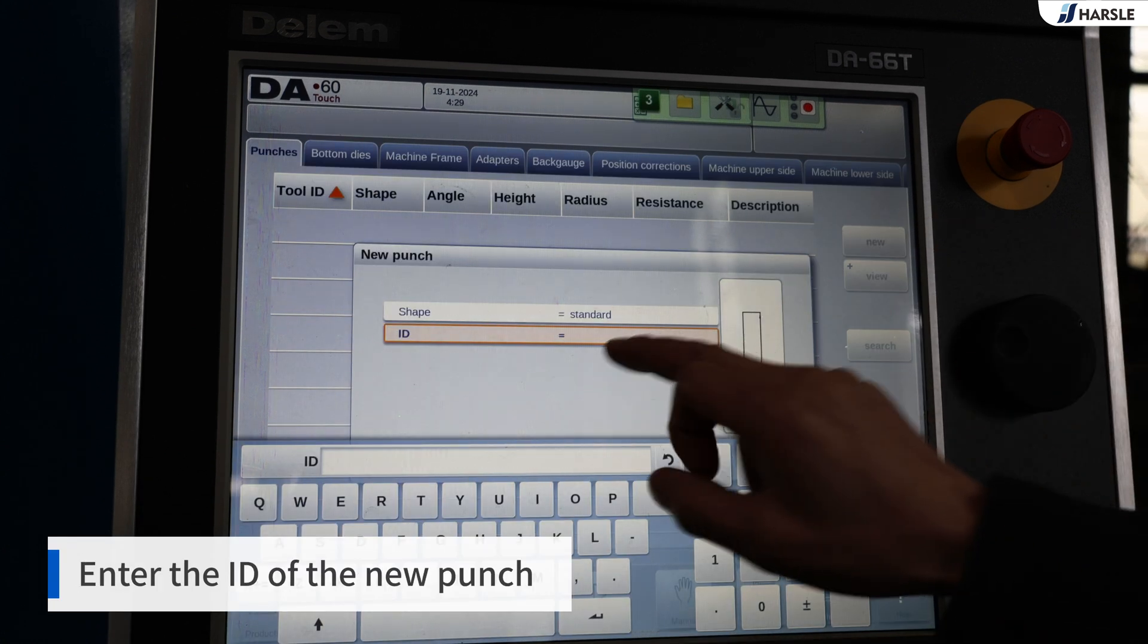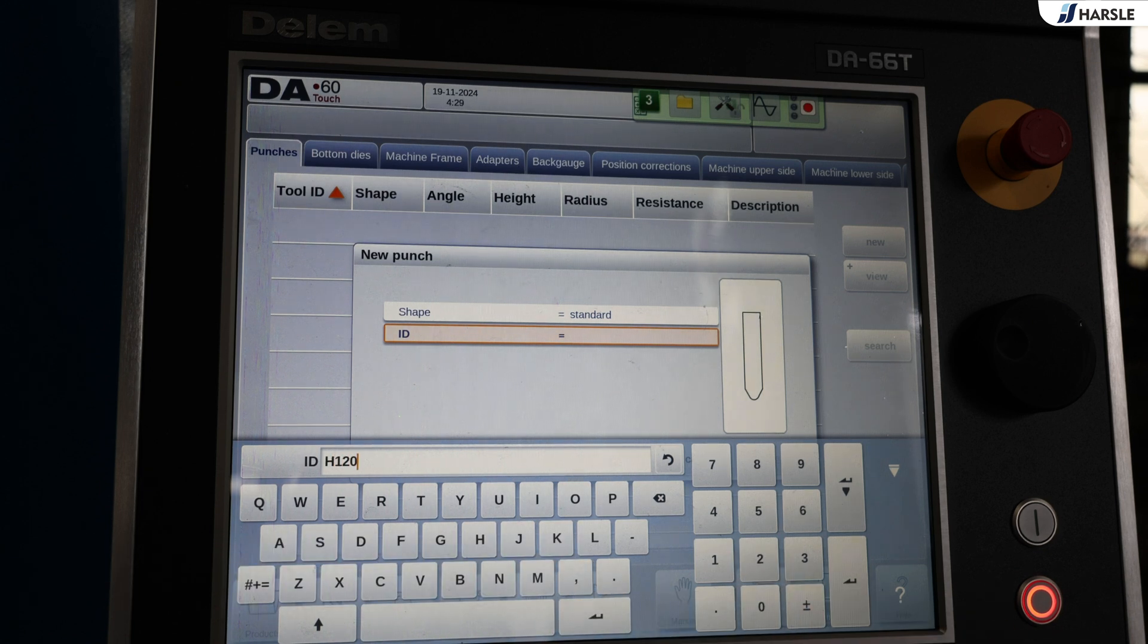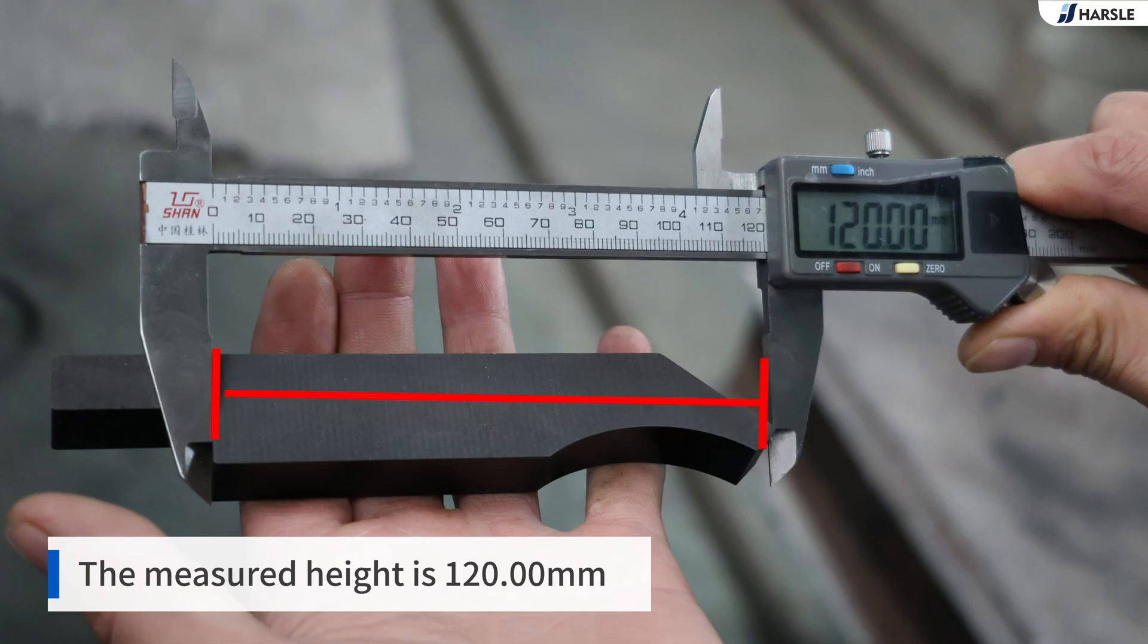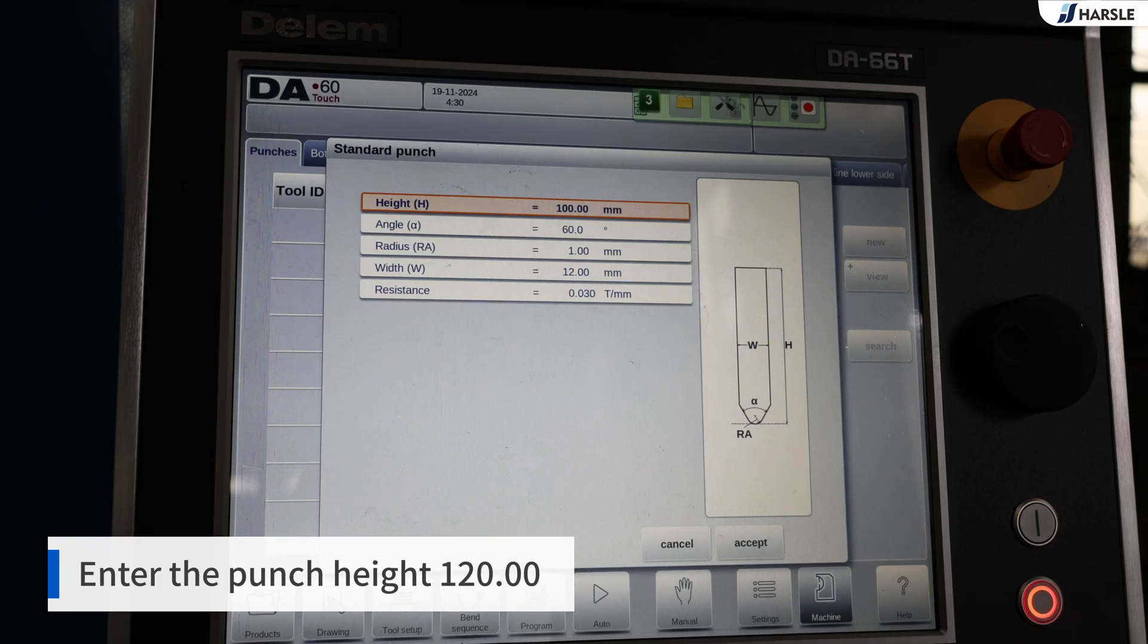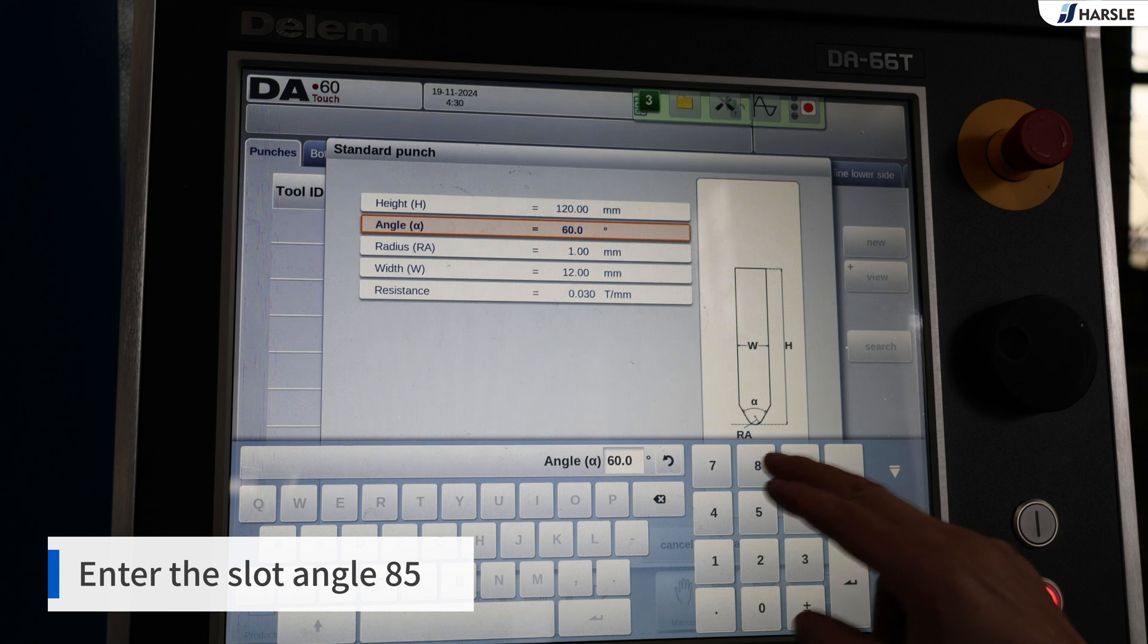Click the new. Enter the ID of the new punch. The measured height is 120 millimeters. Enter the punch height 120.00. Enter the slot angle 85.